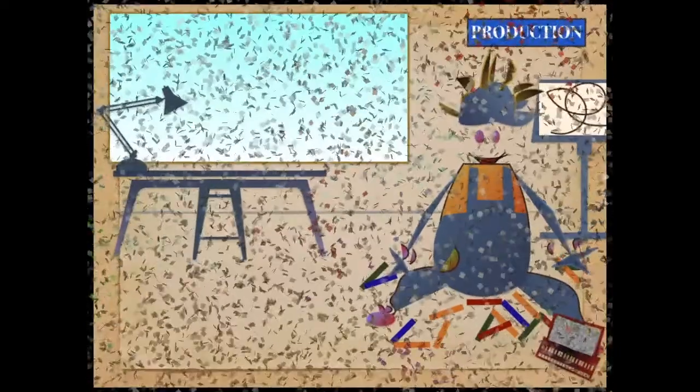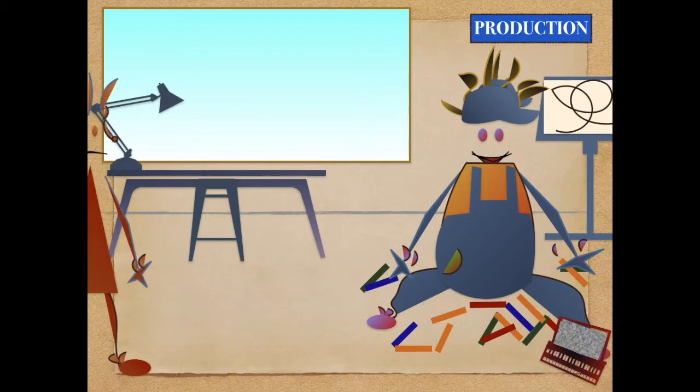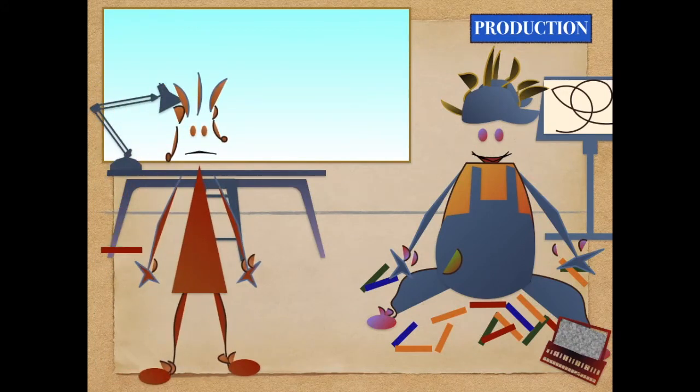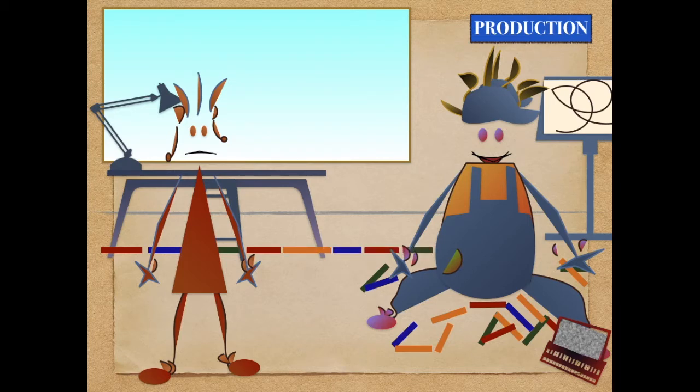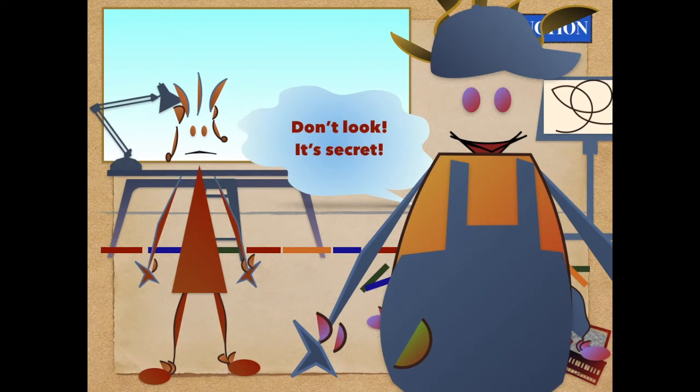She decides to go to talk to Jim again, the production manager. She goes to his office. He's sitting on the floor, making a long line with lots of pens and pencils of different colours. Jane is not very surprised. Jim is a bit eccentric. 'Why are you on the floor? What are you doing?' asks Jane. 'Can't you see? It's perfectly clear. I'm designing a new production line. Don't look. It's a secret.' 'Really? Don't worry. I can't see anything.'